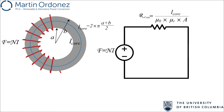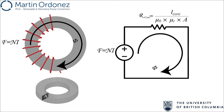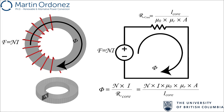We use the average radius of the ring to find the core length, equal to 2 times pi times the average of a and b, where a is the inner radius and b is the outer radius. We also need the core's permeability to calculate reluctance. With all these values, we can find the flux in the core. Magnetic flux is equivalent to current in electric circuits — the flux equals source MMF divided by core reluctance, as shown here.